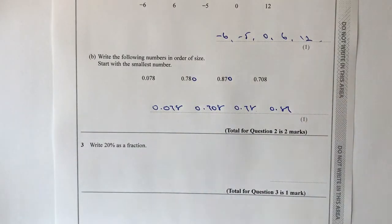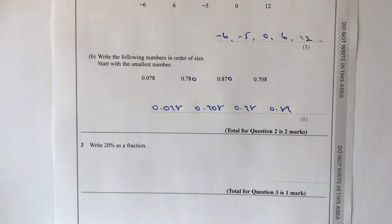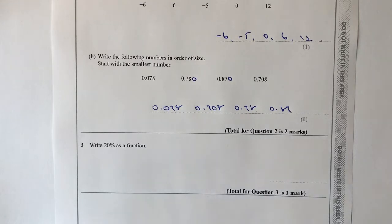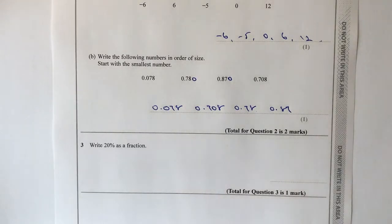It's entirely up to you — you might want to rewrite those numbers yourself. The method I would use is just to make sure you've got the same number of decimal places. Moving on to question three: write 20% as a fraction. Percent means out of a hundred, so I'm going to write it as 20 over 100.